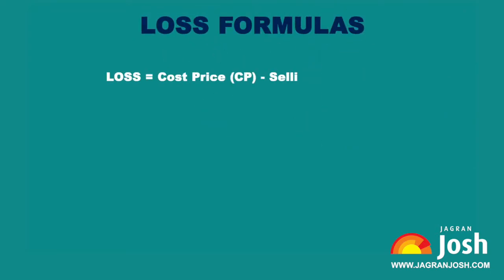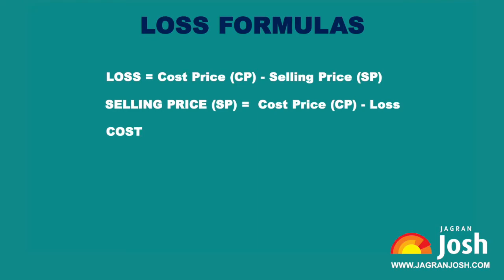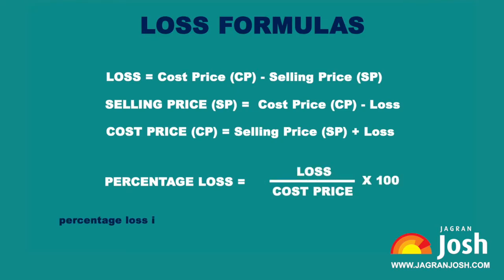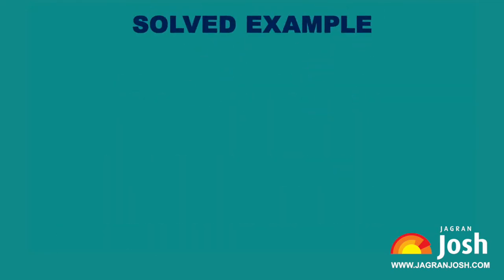Loss formulas: Loss = CP − SP; Selling Price = CP − Loss; Cost Price = SP + Loss. Percentage Loss = (Loss / Cost Price) × 100. Percentage loss is to be calculated always on CP unless required.